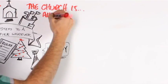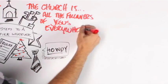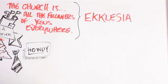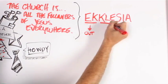The church is all the followers of Jesus everywhere. The Greek word for church is the word ekklesia. It's the combination of two words, ek, which means out, and kaleo, meaning called.